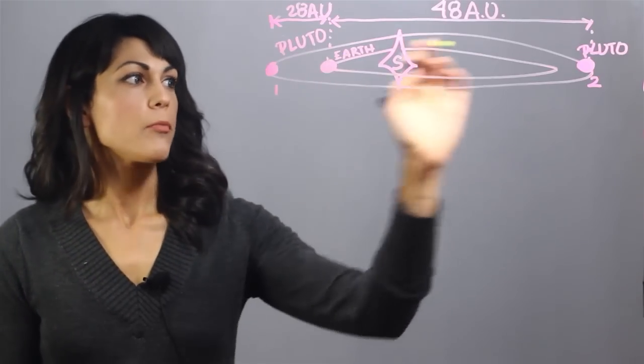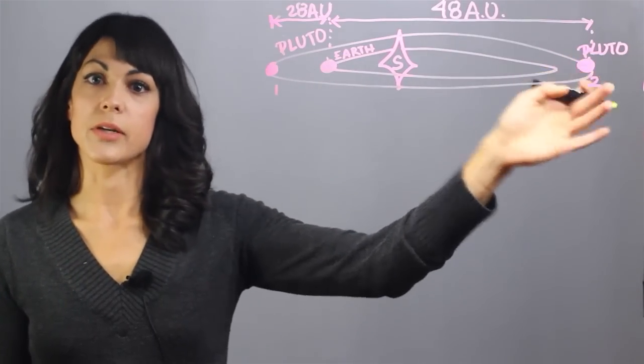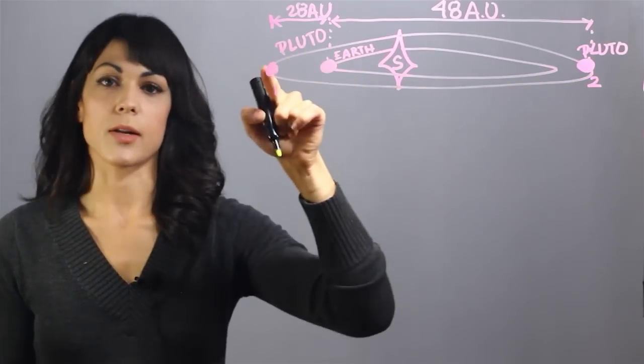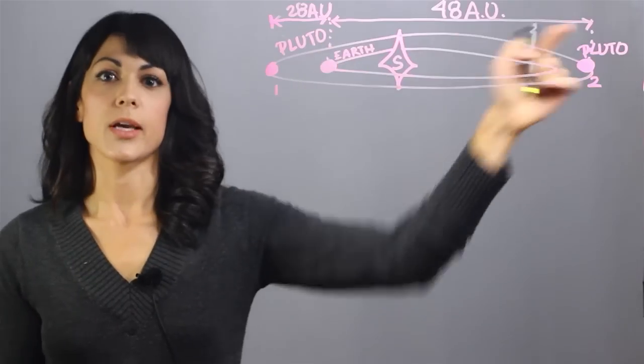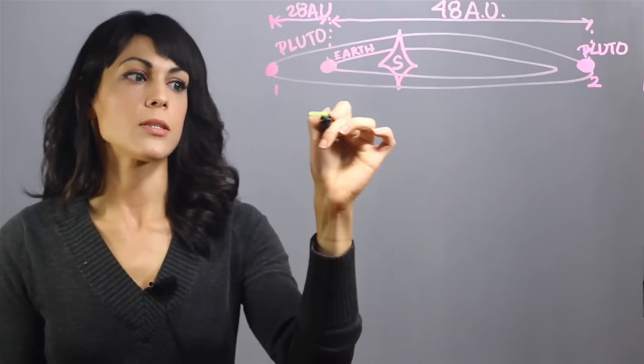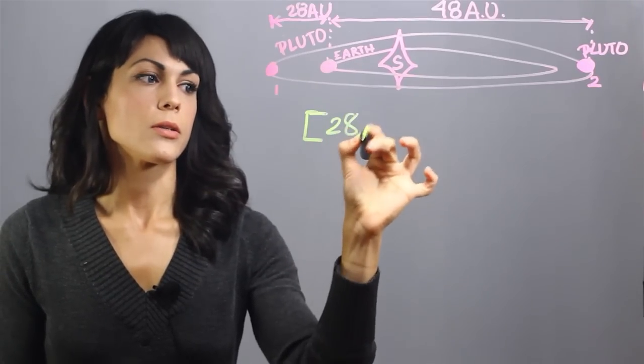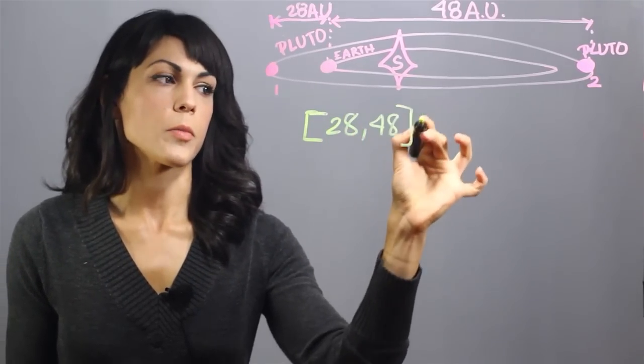Now, if we have Pluto at the second side of its orbit, because the orbits are elliptical, this distance is far greater, and this is 48 astronomical units, which means that the distance from Earth to Pluto goes from 28 to 48 astronomical units.